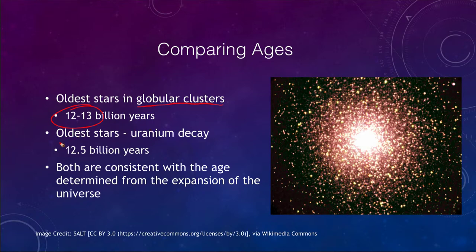We can look at the very oldest stars through a process called uranium decay, looking at the decay of uranium. That will give us ages of about 12 and a half billion years. These tend to be quite consistent, we're not getting wildly differing ages, which is good. They are both consistent with the age that has been determined from the expansion of the universe. We can get a very good estimate of our universe being in the range of 14 billion years old.